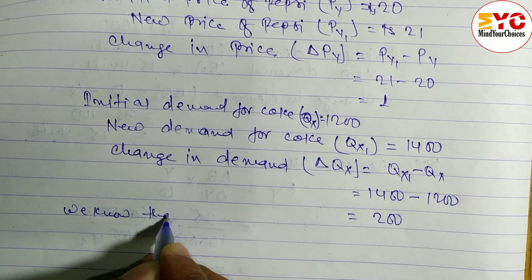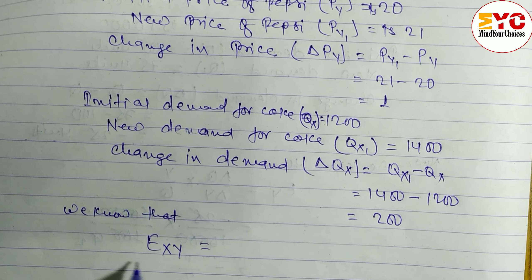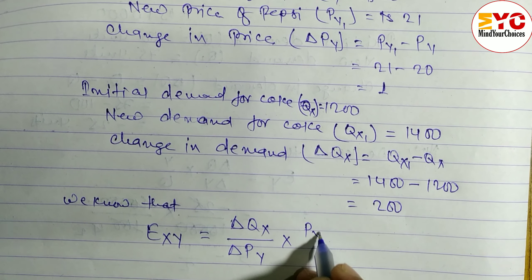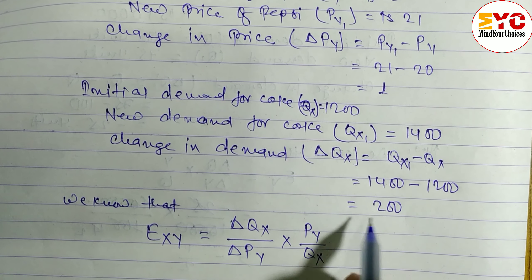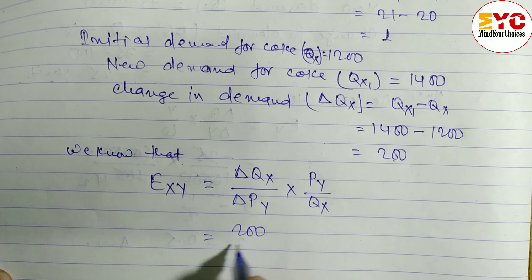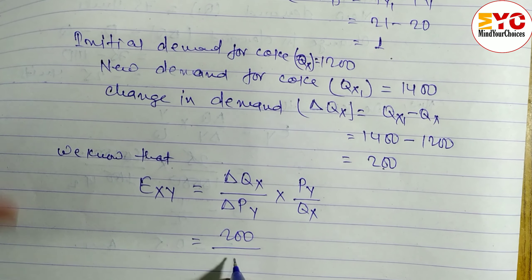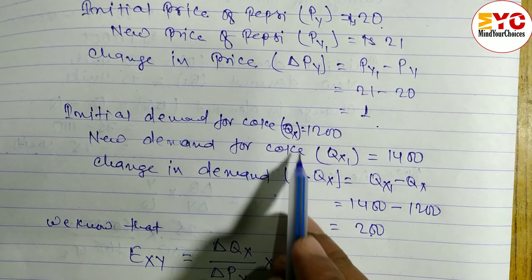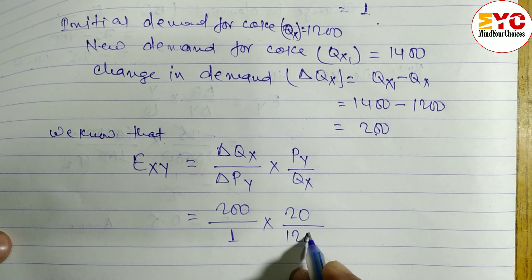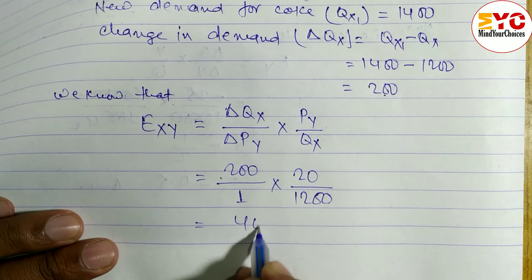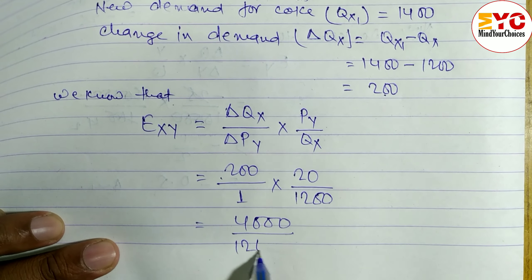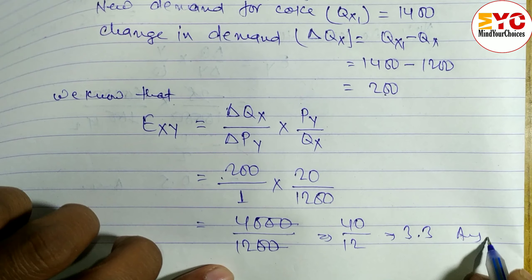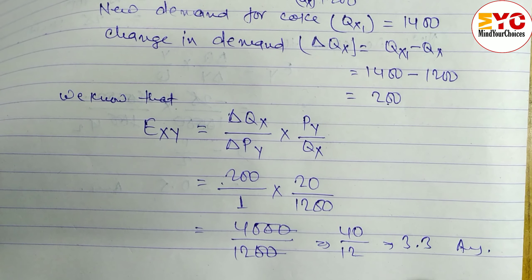Now we apply the cross elasticity of demand formula. Exy equals (ΔQx / ΔPy) multiplied by (Py / Qx). So ΔQx is 200, ΔPy is 1, initial price Py is 20, and initial quantity Qx is 1200. This gives us 4000 divided by 1200, which simplifies to 40 by 12, equal to approximately 3.3. That is the answer. Hope you understand this problem related to cross elasticity of demand.